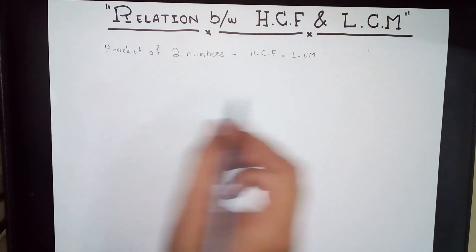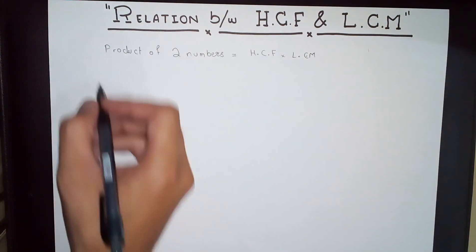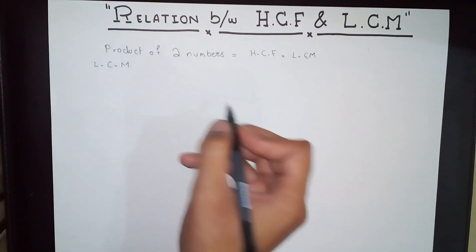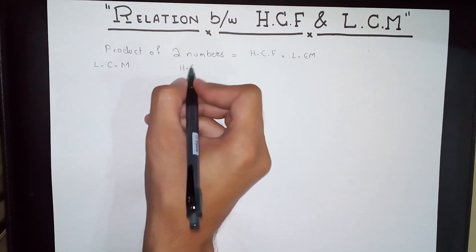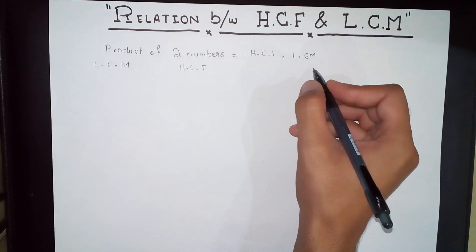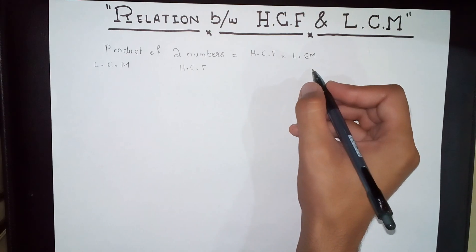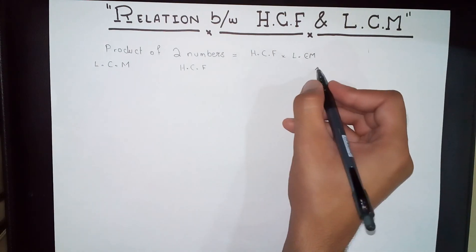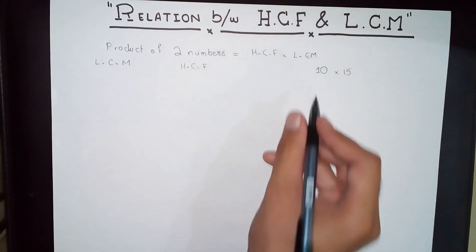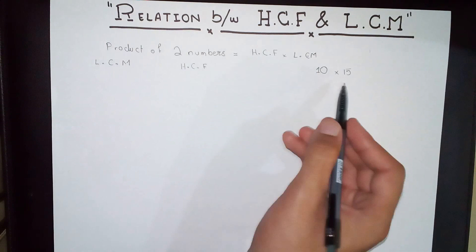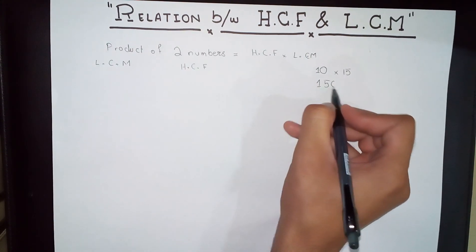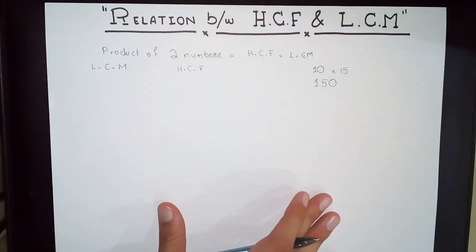Let's see if that is actually true. We're going to do a little proof. We'll set up the LCM here, the HCF right beside it, and the product of two numbers over here. We're going to use the same two numbers — 10 and 15. The product of the two numbers is 10 times 15, which equals 150.